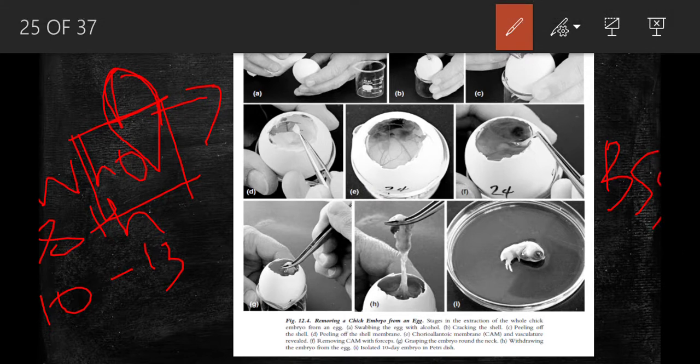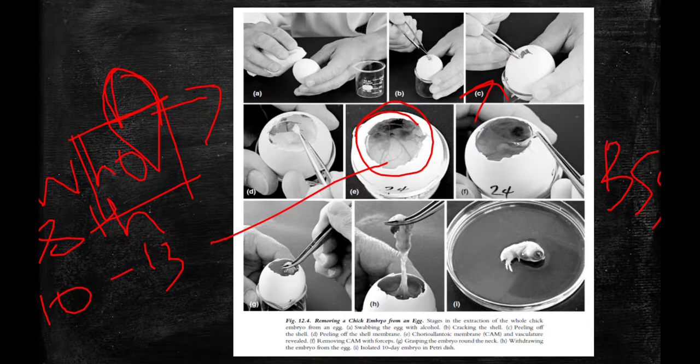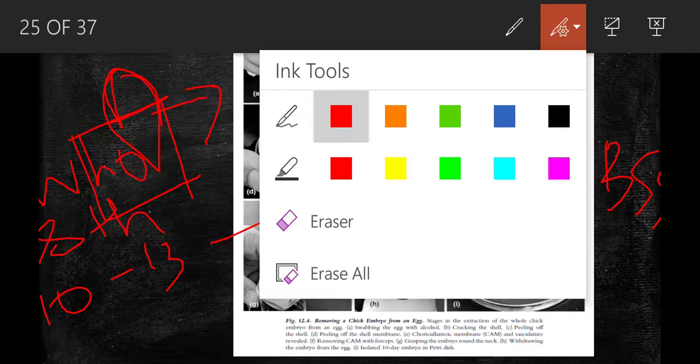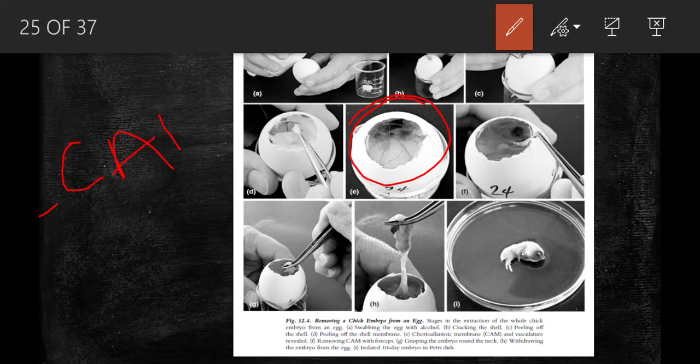Using this forceps, you'll peel out the white shell membrane, and once you peel this out you can see the CAM.